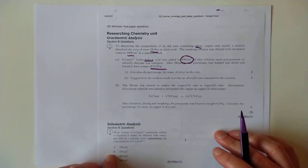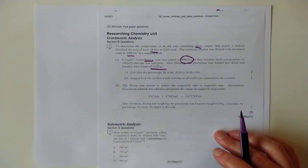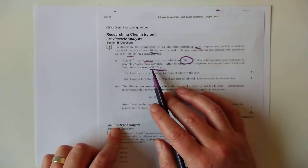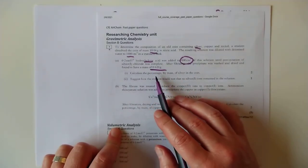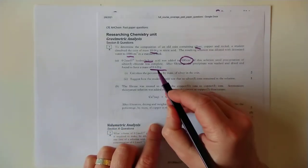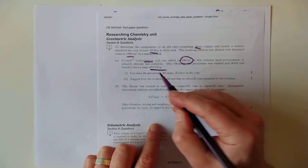After filtration, the precipitate was washed and dried and found to have a mass of 0.62. So that's the mass of precipitate. There's a wee black floaty fly over this page. Go away. Thank you. So that's the mass of the precipitate. And they want the percentage by mass of silver in the coin.